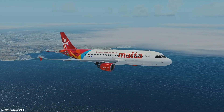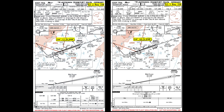Let's have a look at the mentioned approach charts here in Frankfurt. On the left-hand side you can see the ILS Zulu runway 25R, while on the right-hand side you can see the ILS Yankee 25R. This is an easy example because you can see that the reason they are called differently is because they actually have a different ILS frequency. The ILS Zulu 25R has a frequency of 111.35, while the ILS Yankee 25R has a frequency of 109.75.